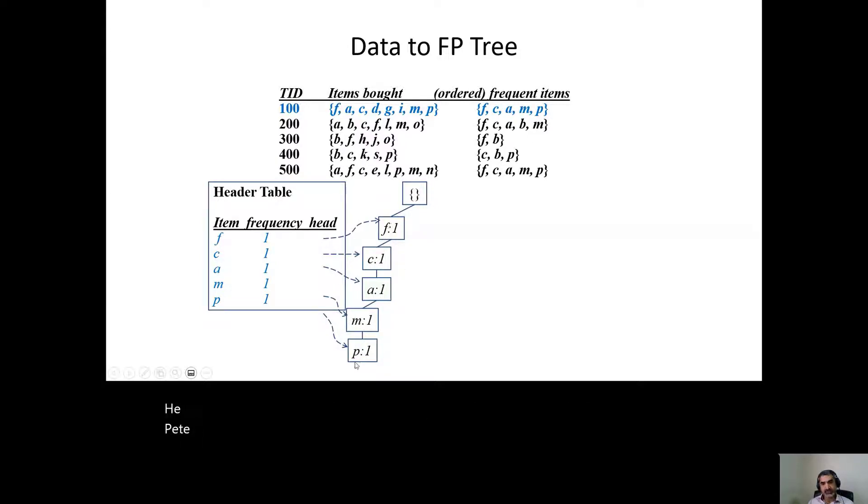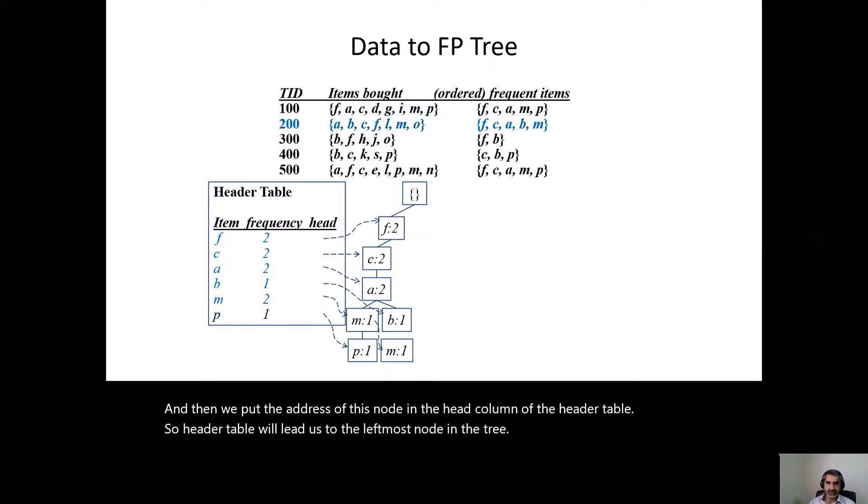Till now, we have come across F, C, A, M, P only once. That's why this frequency is just one at transaction one. And then we put the address of this node in the head column of the header table. So the header table will lead us to the leftmost node in the tree. For the next transaction, we have F, C, A, B, M. So we check in the tree, do we have F under the root? Yes, we increment the count.